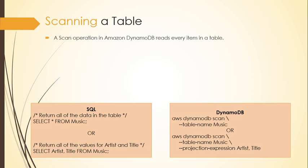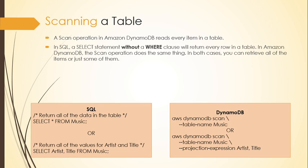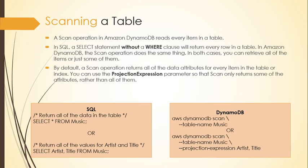A scan operation in Amazon DynamoDB reads every item in a table. If you want to retrieve all the items from your DynamoDB table, you can use scan. In SQL, a SELECT statement without a WHERE clause returns every row in a table — the DynamoDB scan operation does the same thing. By default, the scan operation returns all of the data attributes for every item in the table or index.